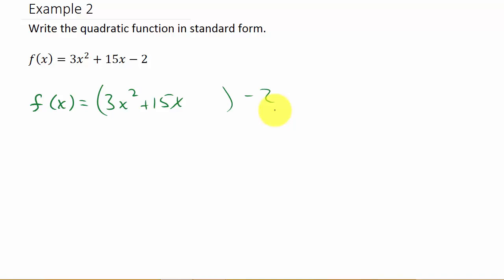So basically what we're going to do is complete the square on this. But remember, you cannot complete the square unless you have a 1 in front of your squared term. And you can see here we have a 3 in front. So what I need to do is I need to factor a 3 out of this part. So I'm going to need to rewrite that as f of x equals 3 times x squared plus 5x, leave a little space here, minus 2.